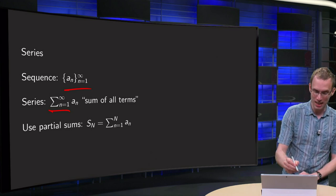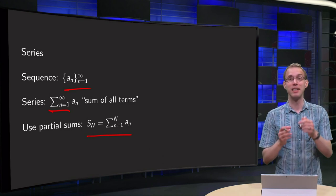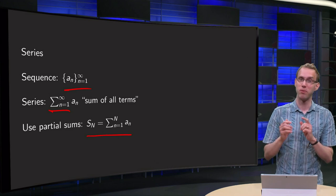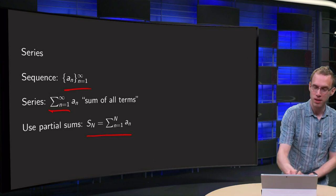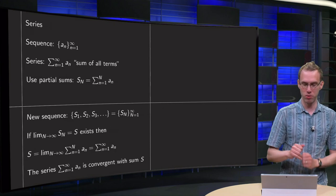Well we can add finitely many terms, the sum from 1 to capital N. It is called the nth partial sum of the series, S_N. We can do that. And we can use those partial sums. What are we going to do?